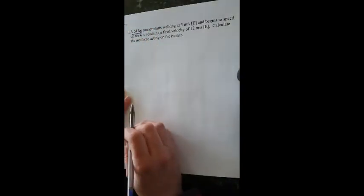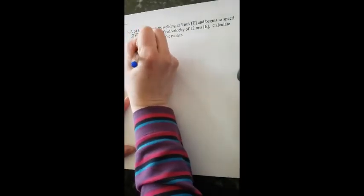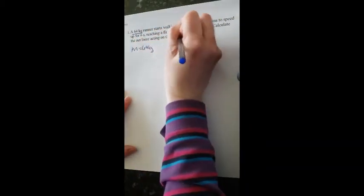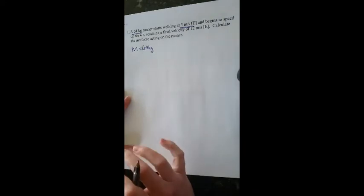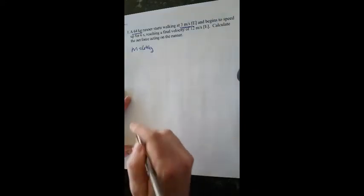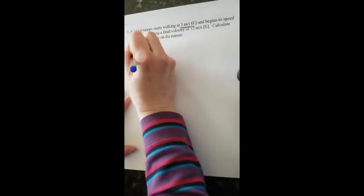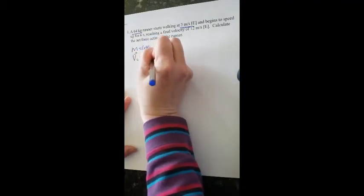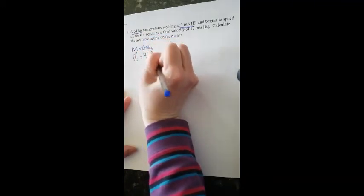So as always, we write down our given information. So we know the mass. We have 64. So our mass is equal to 64 kilograms. And he's walking at 3 meters per second east. That's our VI, our initial speed. So our initial speed is 3 meters per second east.